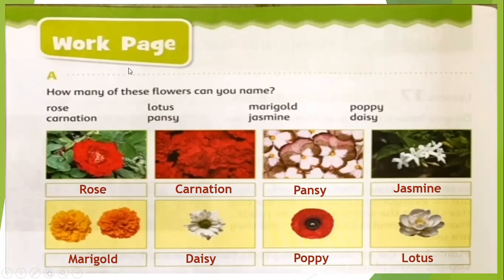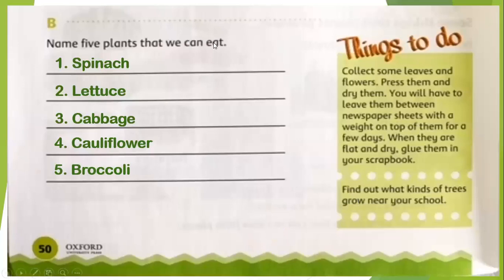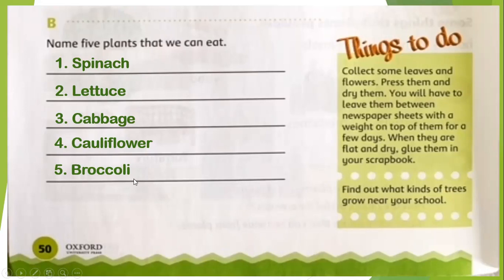This is exercise A of your work page — names of different flowers. Then we have: name five plants that we can eat. You can eat spinach — a very yummy and healthy vegetable that provides you iron and gives you a lot of energy. Then lettuce, cabbage, cauliflower, and broccoli. These are all vegetables which come from plants. You can also write names of fruits like apple, orange, banana, but they ask five, so: spinach, lettuce, cabbage, cauliflower, and broccoli. Very healthy food. That's done for the work page of lesson 17.